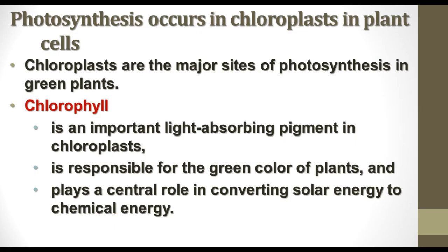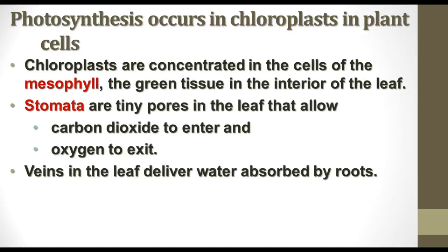Photosynthesis occurs in the chloroplasts in plant cells — these are the major sites of photosynthesis. One of the main things found in chloroplasts is chlorophyll. Chlorophyll is a pigment, a substance that absorbs light at certain wavelengths, and it is why plants are green. Chlorophyll helps convert solar energy to chemical energy. Chloroplasts are found mostly in the cells of the mesophyll, the green tissue in the interior of the leaf.